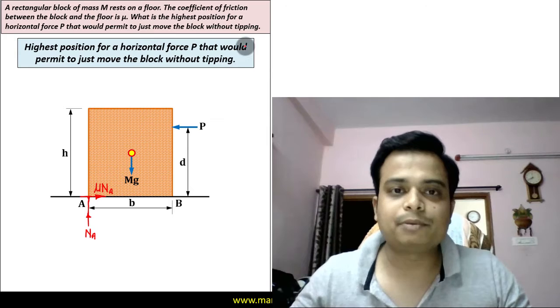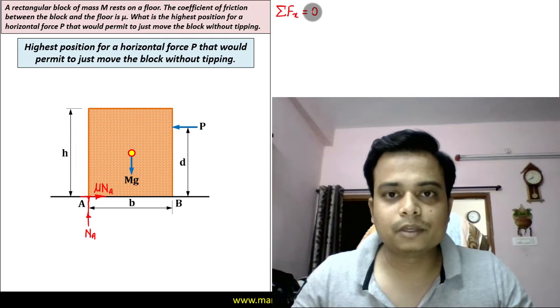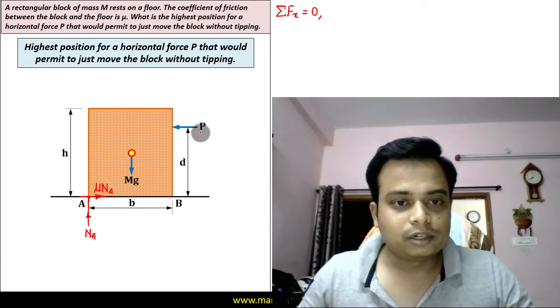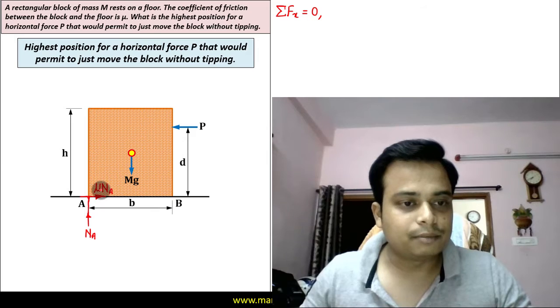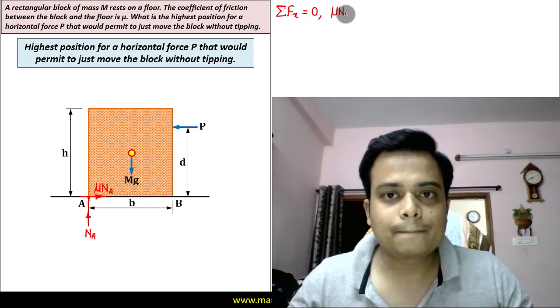Now first of all I'm going to go ahead and apply summation of all the forces in x-direction is equal to zero. What are they? So we've got this P, we've got this μN_A. μN_A is positive, P is negative. μN_A minus P is equal to zero. So that's the first equation.